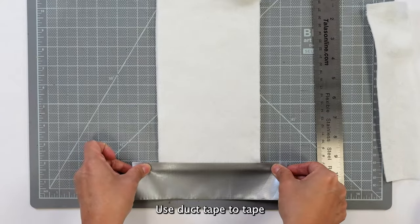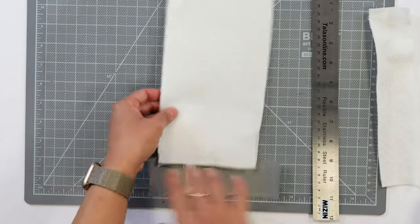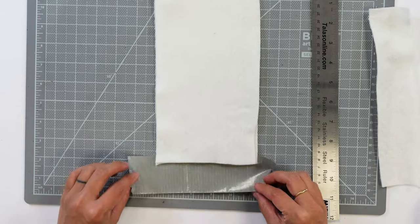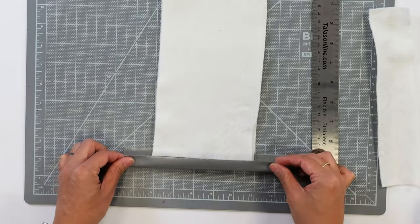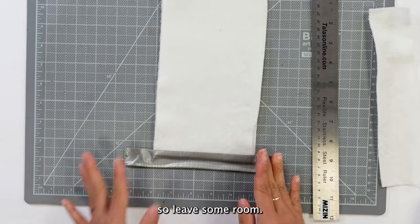Use duct tape to tape both sheets of craft felt together. The tape must be folded back onto itself to make a very thin edge, so leave some room.